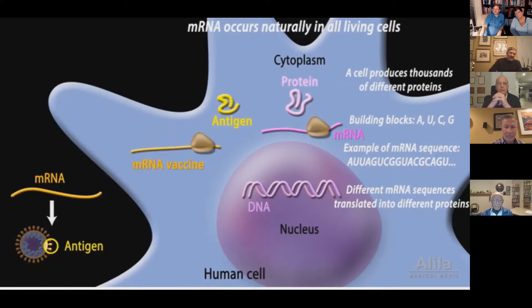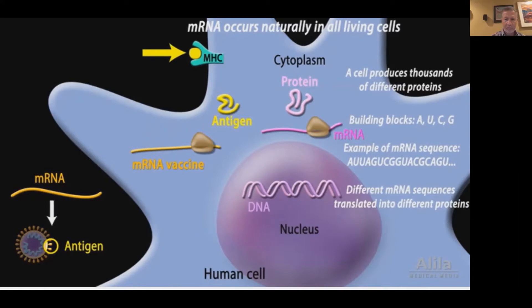The antigen is then displayed on the cell surface, where it is recognized by the immune system. From here, the sequence of events is similar to that of a conventional vaccine.